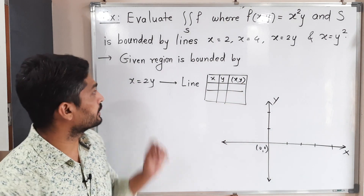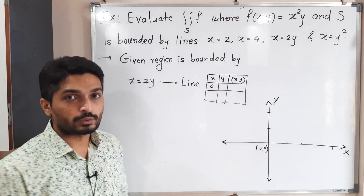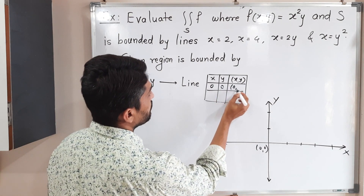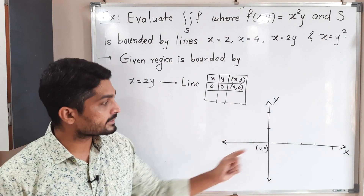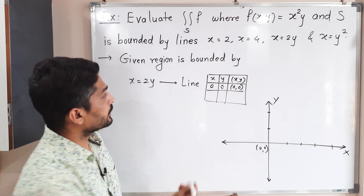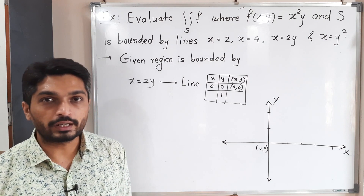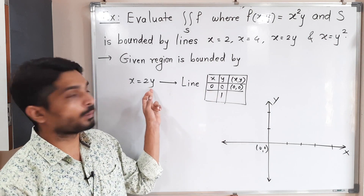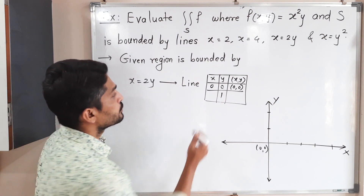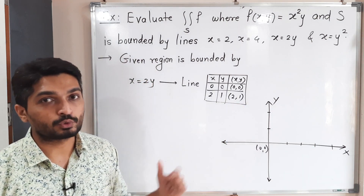I put x equal to 0. If x equals 0, then 2y is also 0, so y is also 0. The first point is (0, 0) — this line passes through the origin. We want one more point, so I take y equal to 1. If y equals 1, obviously x will be 2. So the second point is (2, 1).